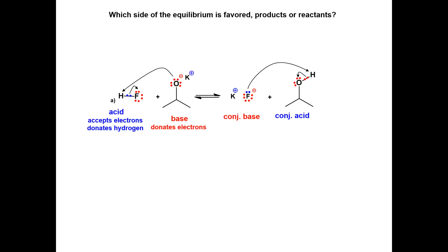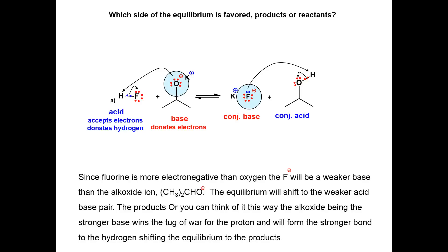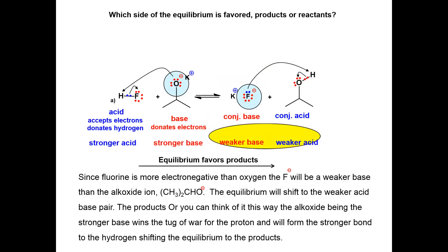Now that you have identified the acids and bases on both sides of the equilibrium, determine relative base strength. Since fluorine is more electronegative than oxygen, the fluoride ion will be a weaker base than the alkoxide ion. The equilibrium will shift to the weaker acid-base pair, the products. Or you can think of it this way: the alkoxide, being the stronger base, wins the tug of war for the proton and will form the stronger bond to the hydrogen, shifting the equilibrium to the products.